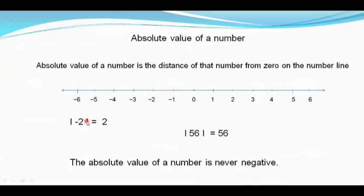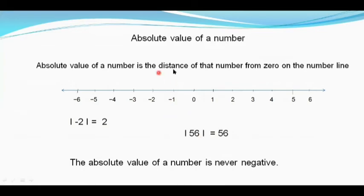The absolute value of minus 2 is 2. If we find the absolute value of 56, from 0 we move towards 56 and count the places, so the absolute value of 56 is 56. Since it is a distance, and distance is never negative, the absolute value of a number is never negative.